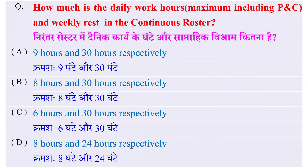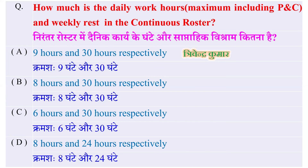How much is the daily work hours maximum including PNC and weekly rest in the continuous roster? Continuous roster में किसी कर्मचारी से अधिकतम काम के घंटे कितने होते हैं और साप्ताहिक विश्राम के घंटे कम से कम कितने होते हैं? इसका जवाब है — continuous roster वालों से सप्ताह में अधिकतम 24 घंटे काम कराया जा सकता है (यानि 6 दिन × 9 hours = 54 नहीं, बल्कि 9 hours per day) और कम से कम 30 घंटे का rest मिलना चाहिए। सही उत्तर: 9 hours and 30 hours respectively।